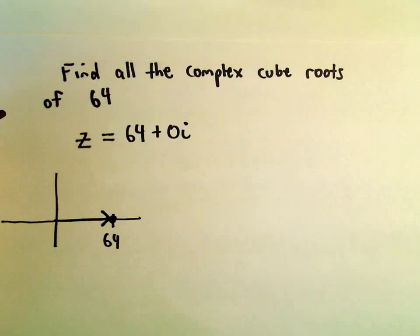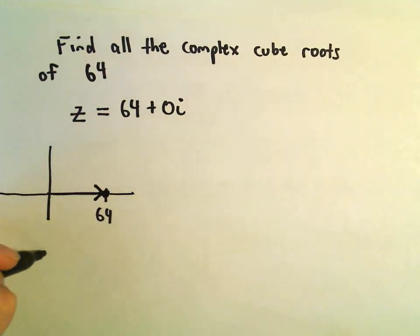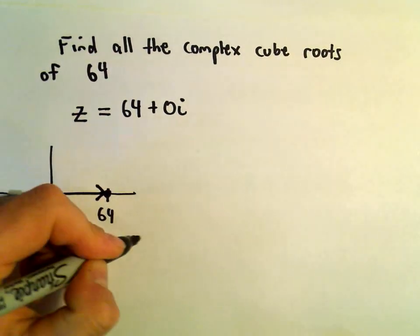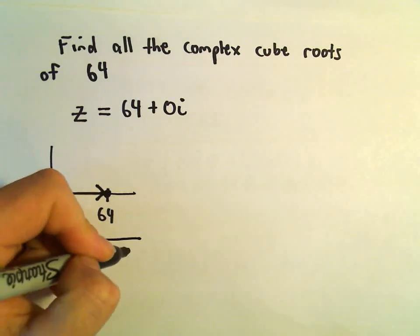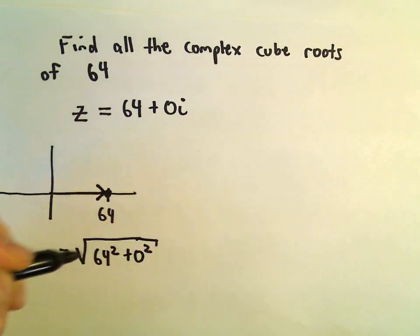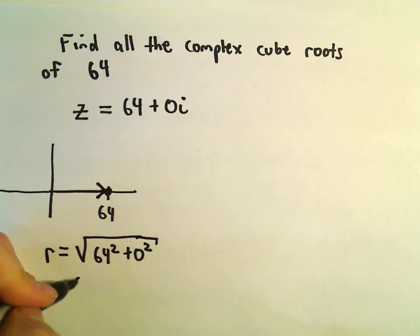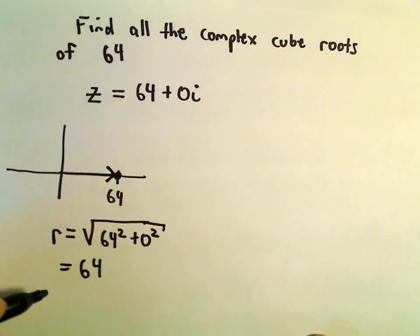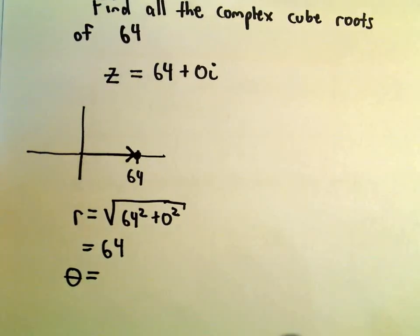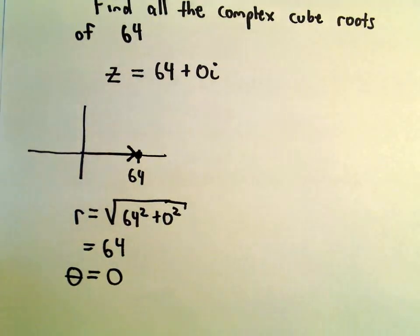Alright, so we'll have to figure out our r value. But to get the r value, we would take 64 squared plus 0 squared. Well, if we simplify that, we'll just be left with 64.